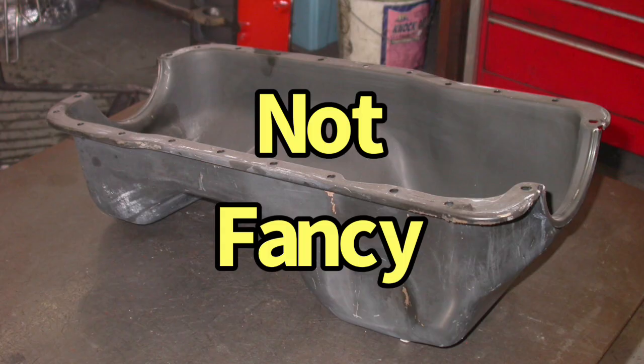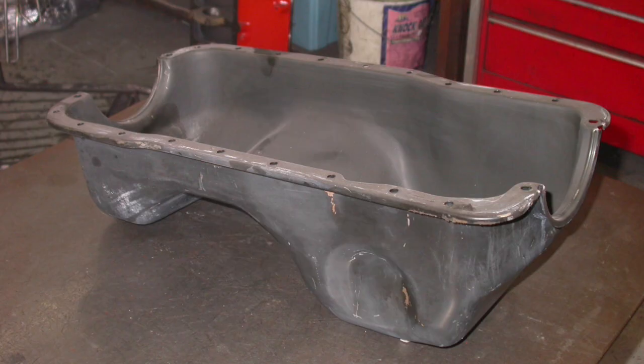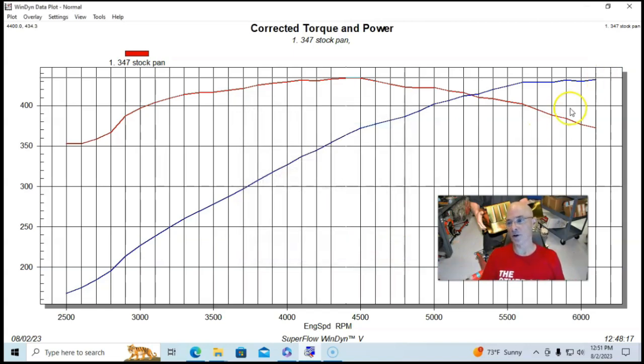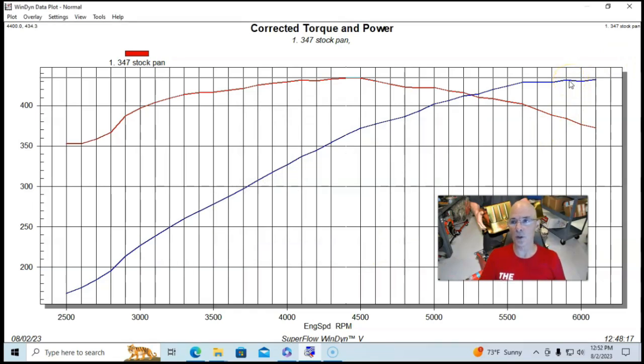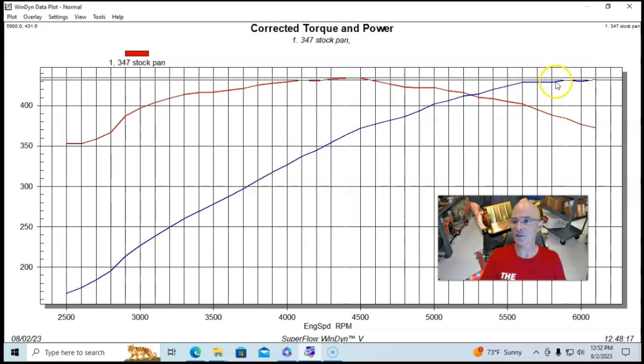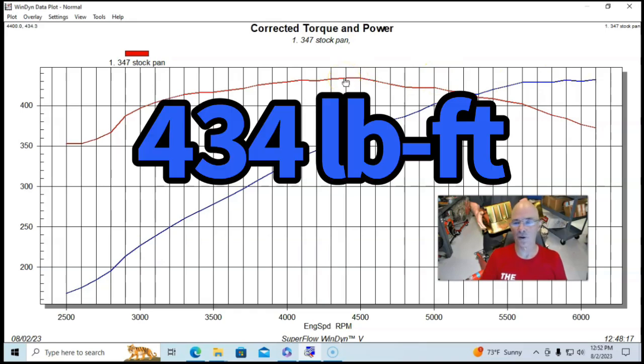So let's take a look and see what we ran. We ran this with a basically stock five liter pan and pickup and a standard volume oil pump. The pump was constant through all the testing. So that's not really important, but run with our stock oil pan and 5w30 oil. This thing produced 432 horsepower, 433.